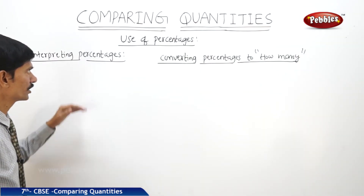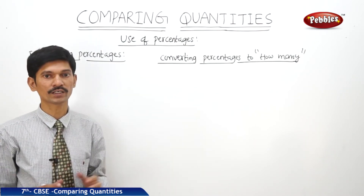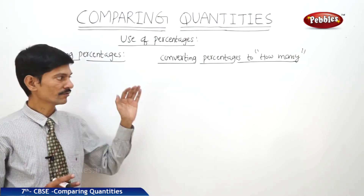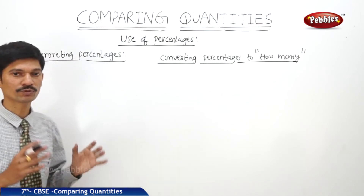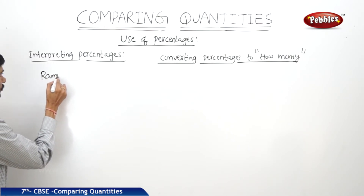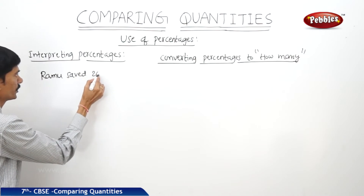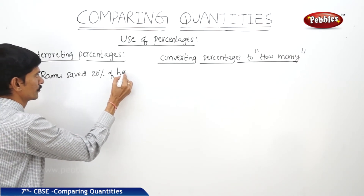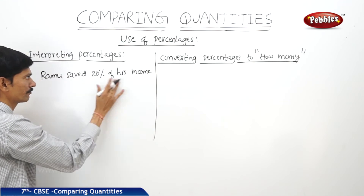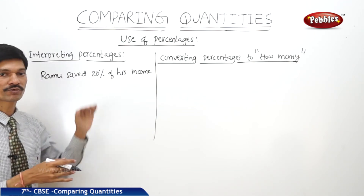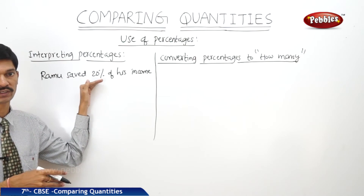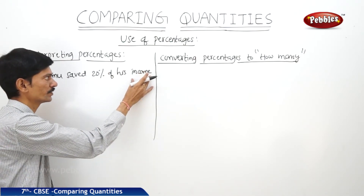Let us see the next topic: use of percentages — how to interpret percentages. So far we have learnt how to convert percentages to decimals or fractions, and how to convert fractions or decimals to percentages. Let us see how to use percentages in daily life. For example, Ramo saved 20% of his income. If his income is 100 rupees, he saves 20 rupees. If his income is 1000 rupees, he saves 200 rupees.